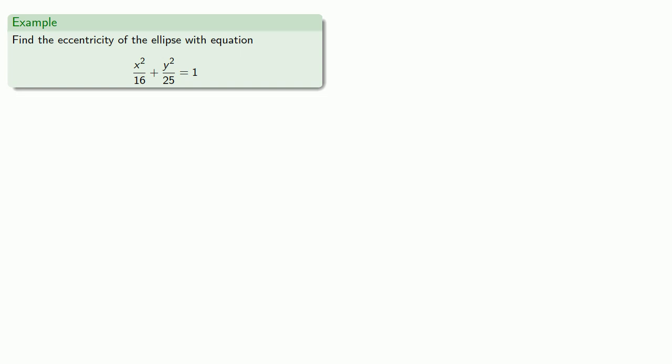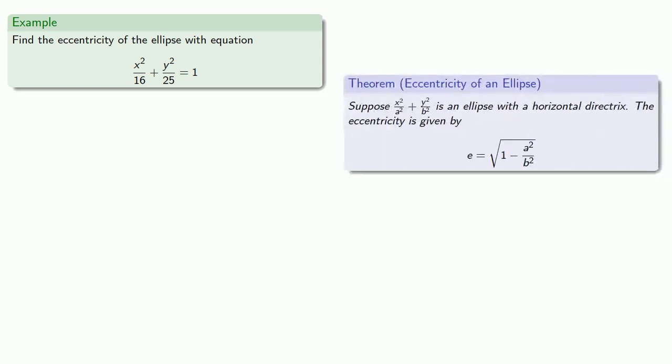So for example, in this equation, a² is the denominator of the fraction with x² as numerator, so a² is 16. b² is the denominator of the fraction with y² as numerator, so b² equals 25. And our eccentricity is 1 minus a² divided by b², or 3/5.